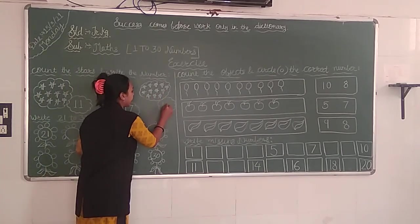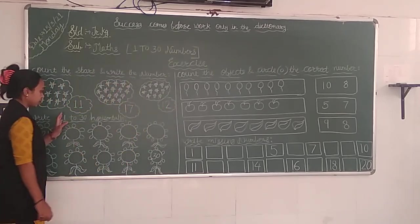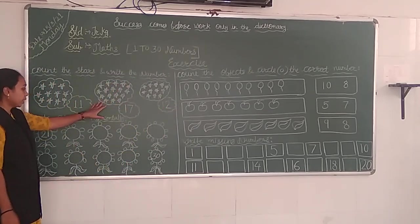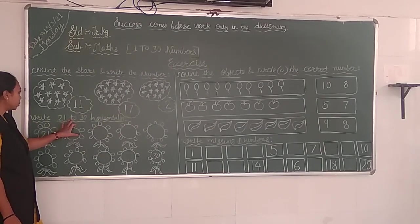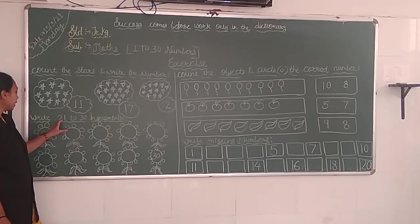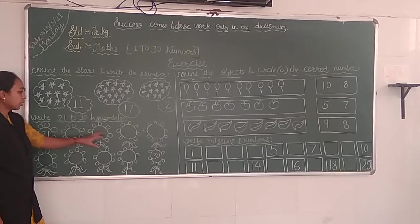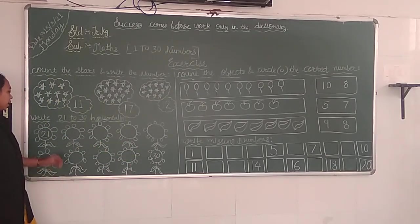We have started counting here: 1, 2, 3, 4, 5, 6, 7, 8, 9, 10, 11. Then: 1, 2, 3, 4, 5, 6, 7, 8, 9, 10, 11, 12, 14, 15, 15, 16.